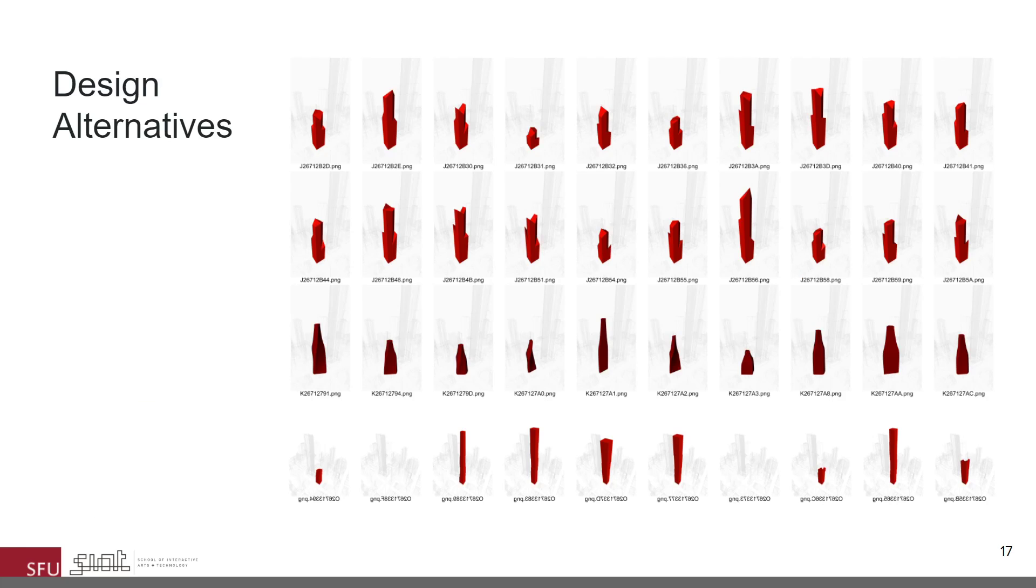Looking at the design alternatives, we used 250 of them, generated using six parametric models developed by different participants. The data associated with each alternative comprised of three things. First, the input parameters used to generate it, second, the form and geometry, and finally, the 13 different performance values such as land use, functional spatial distribution, heat loss and gain, solar exposures, view quality, etc.